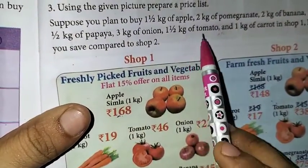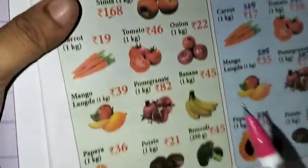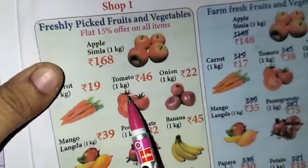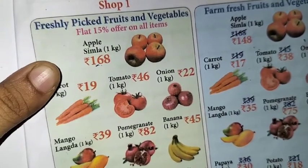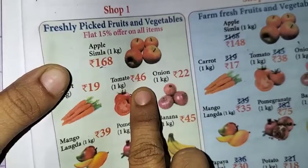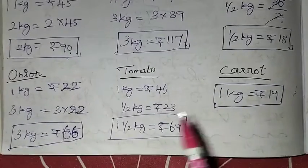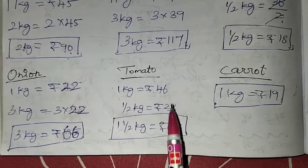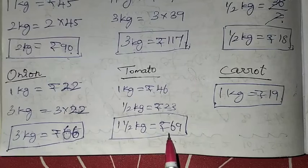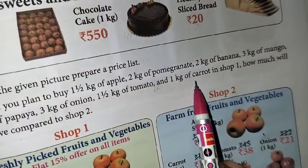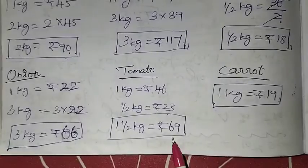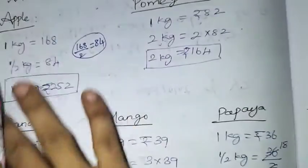For tomato: 1 kg = Rs. 46, half kg = Rs. 23, so 1.5 kg of tomato = 46 + 23 = Rs. 69. For carrot: 1 kg = Rs. 19, so 1.5 kg of carrot is calculated and all items are added up.